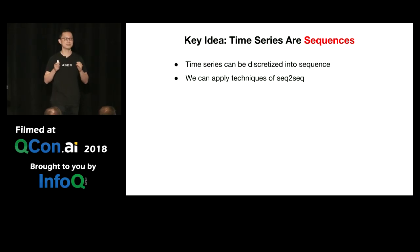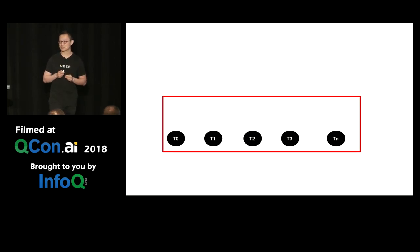Time series are actually sequences. But why does that matter? Because once we can discretize a time series into sequences, we can apply a very powerful technique called sequence to sequence. It was first published back in 2014 by Google to solve machine translation problems. But it turned out this sequence to sequence technique is very good at modeling time series forecasting as well.